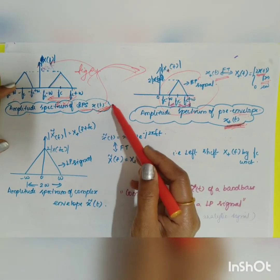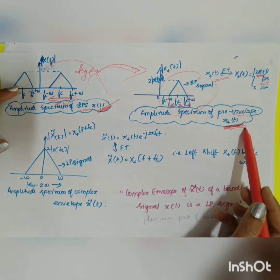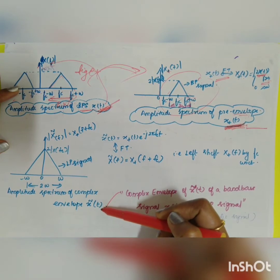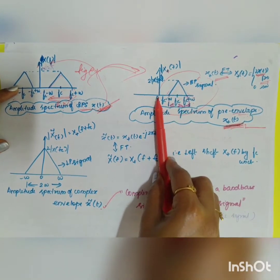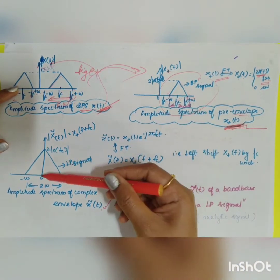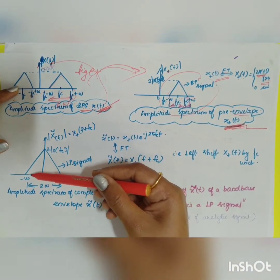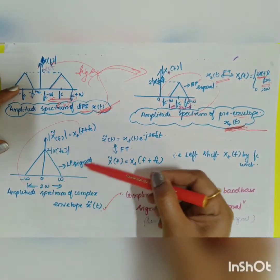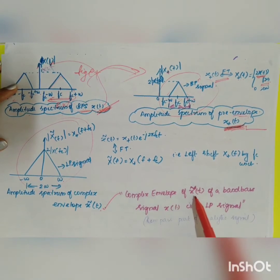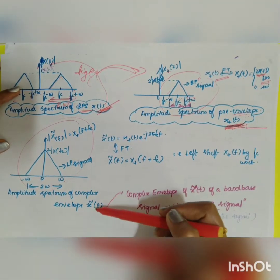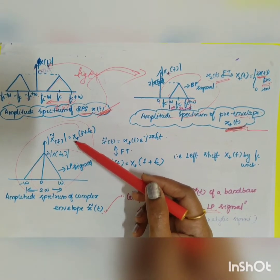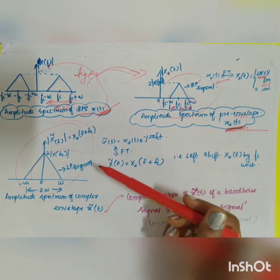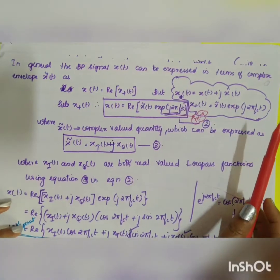The spectrum of the complex envelope x̃(t) is the pre-envelope spectrum frequency-shifted to the left by fc, giving a symmetric spectrum centered at zero ranging from −W to +W. This looks like a low-pass signal. Therefore, the complex envelope x̃(t) of a bandpass signal x(t) is a low-pass signal, i.e., the low-pass representation. In magnitude: |X̃(f)| = X⁺(f + fc).